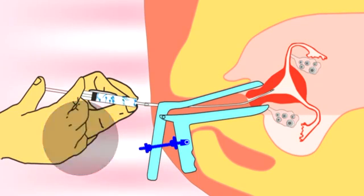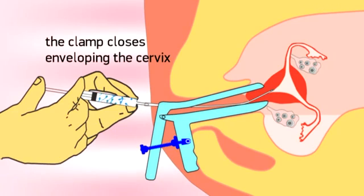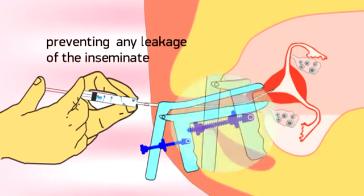The outer nut is released and the clamp closes enveloping the cervix. By turning the inner nut, the specially modified tips secure the clamped cervix.